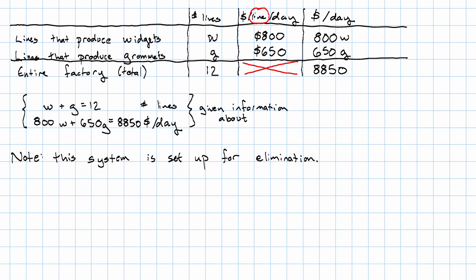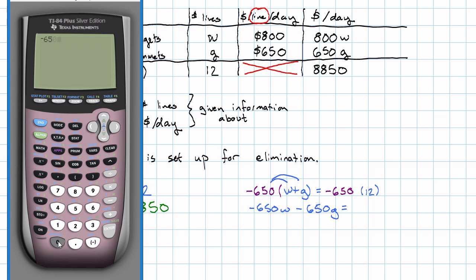How would we solve this system then? Let's see. Looking at this, I think it's going to be easiest to multiply the first equation on both sides by negative 650. Distributing, we'll have negative 650W minus 650G equals, this is a job for our calculator, negative 650 times 12 is negative 7800.